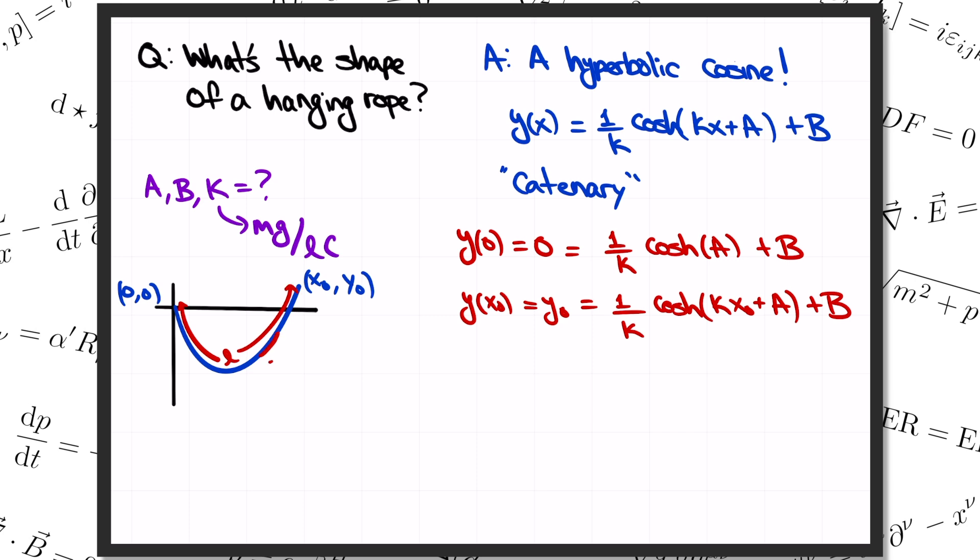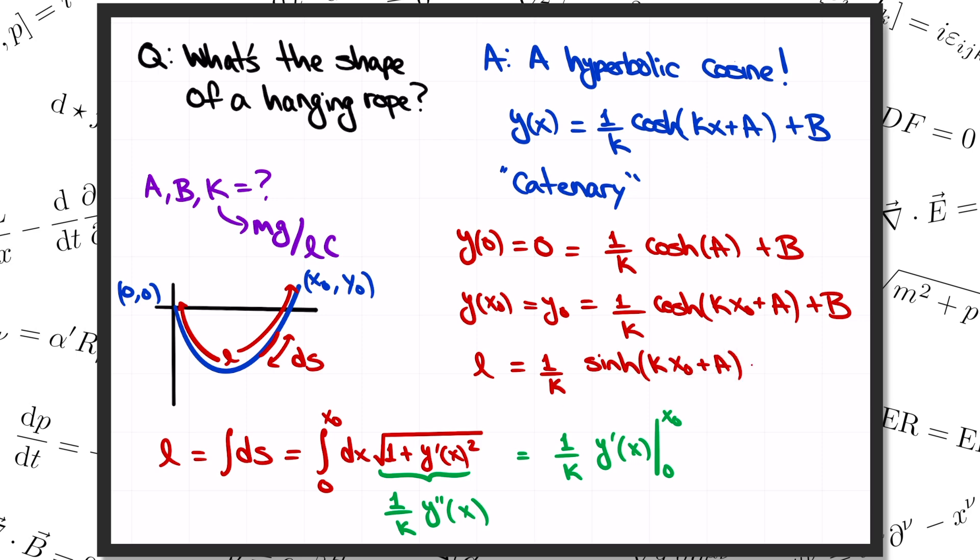And the missing condition is the fact that the rope has length L. Remember that we solved this problem by breaking the rope up into many little pieces of length ds. Then by adding up all those little lengths, we had better reproduce the total length of the rope. So we need to evaluate the integral of dx times the square root of 1 plus y prime squared, from 0 to x0. The integrand here is just y double prime over kappa, according to the differential equation that we just solved. So when we do the integral, y double prime just turns into y prime. Setting this equal to the length of the rope gives us one more condition. L equals 1 over kappa, times sinh of kappa x0 plus a, minus sinh of a. Now we have three equations in the three unknowns, a, b, and kappa, and we can solve. Or at least we can solve numerically. These are pretty complicated equations.